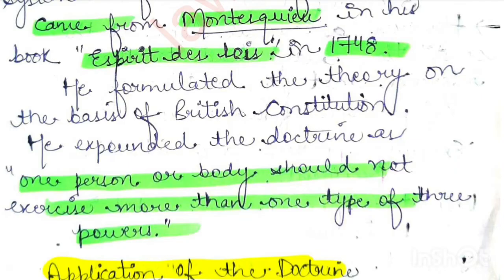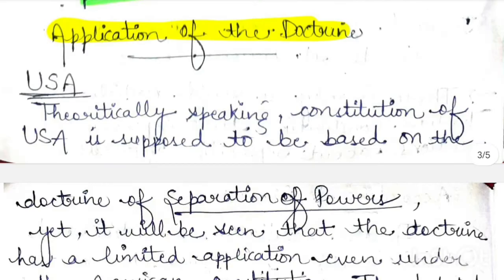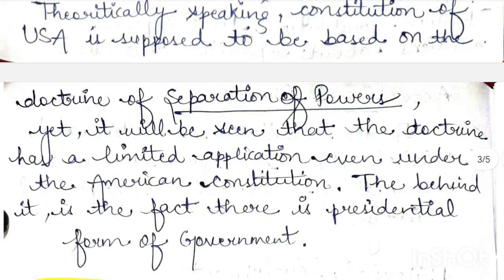However, if we talk scientifically and systematically about who brought this doctrine together, that was Montesquieu — remember, they are the father of the separation of powers doctrine. Their book is named L'Esprit des Lois, which came in 1748. In his principle, he formulated the theory on the basis of the British constitution. He said that one person or body should not exercise more than one type of the three powers — each person or body should exercise only one power. Theoretically, the US Constitution is based on this theory, but not completely — only partially, because there is a presidential form of government.